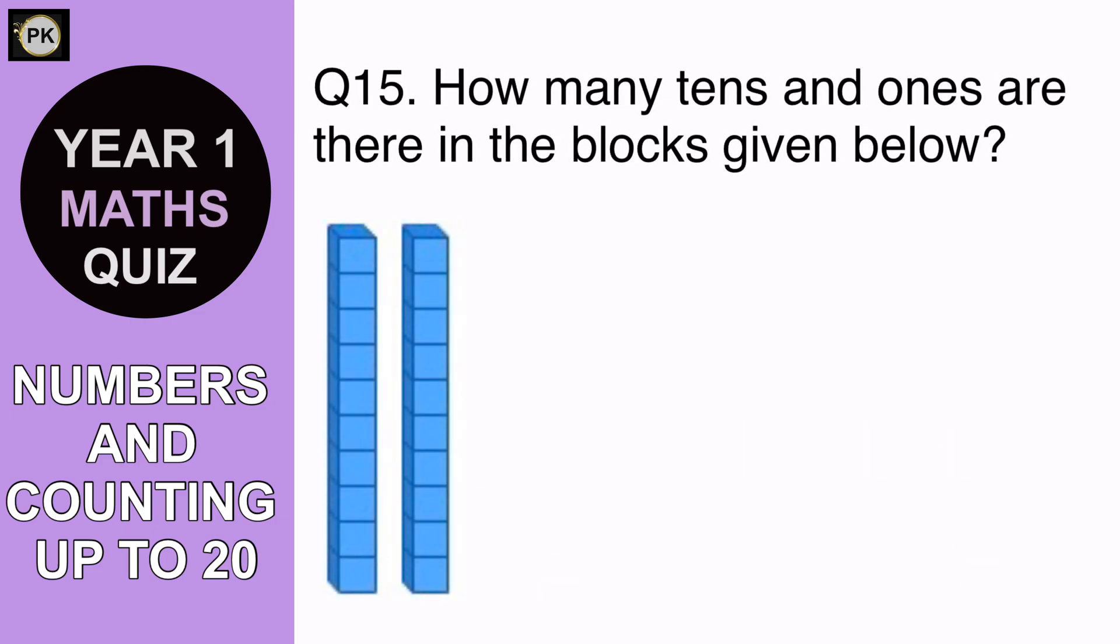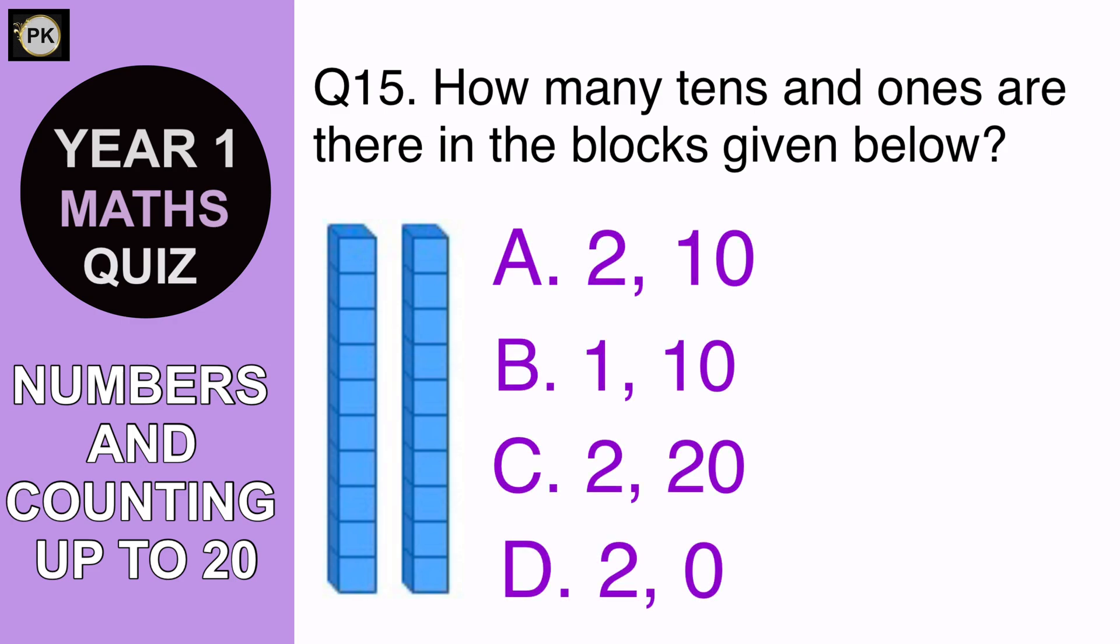How many tens and ones are there in the blocks given below? A 2 and 10, B 1 and 10, C 2 and 20, or D 2 and 0. And the answer is D 2 and 0.